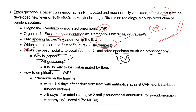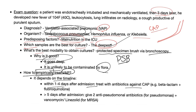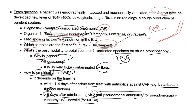Empiric treatment for VAP depends on the timeline. Within 1–4 days after admission, treat for Strep pneumo with beta-lactam plus a respiratory fluoroquinolone. After 5+ days, target Pseudomonas and MRSA: use two anti-pseudomonal antibiotics plus vancomycin or linezolid to cover MRSA.